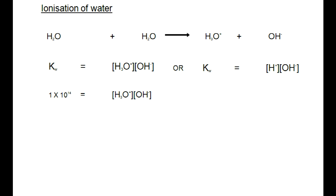The Kw of water is very small: Kw = 1×10⁻¹⁴. This extremely small value confirms that mainly water is present, and the concentrations of H3O+ and OH- ions in water are very small. This is a very important expression for pH calculations: Kw = [H3O+] × [OH-].